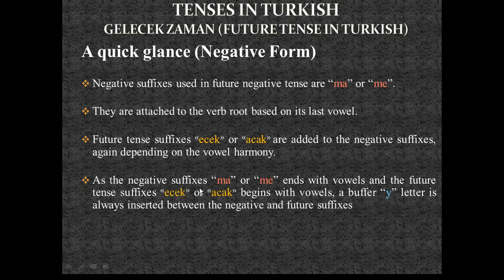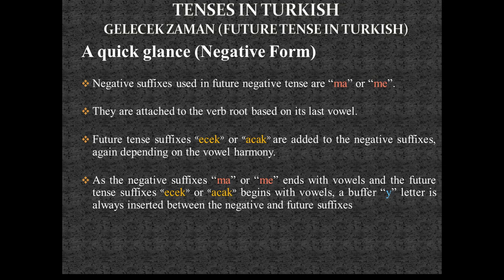Since the negative suffixes 'ma' or 'me' end with vowels — 'a' and 'e' — and the future tense suffixes 'acak' or 'ecek' begin with vowels 'a' and 'e,' a buffer 'y' letter is always inserted between the negative suffix and the future tense suffix.